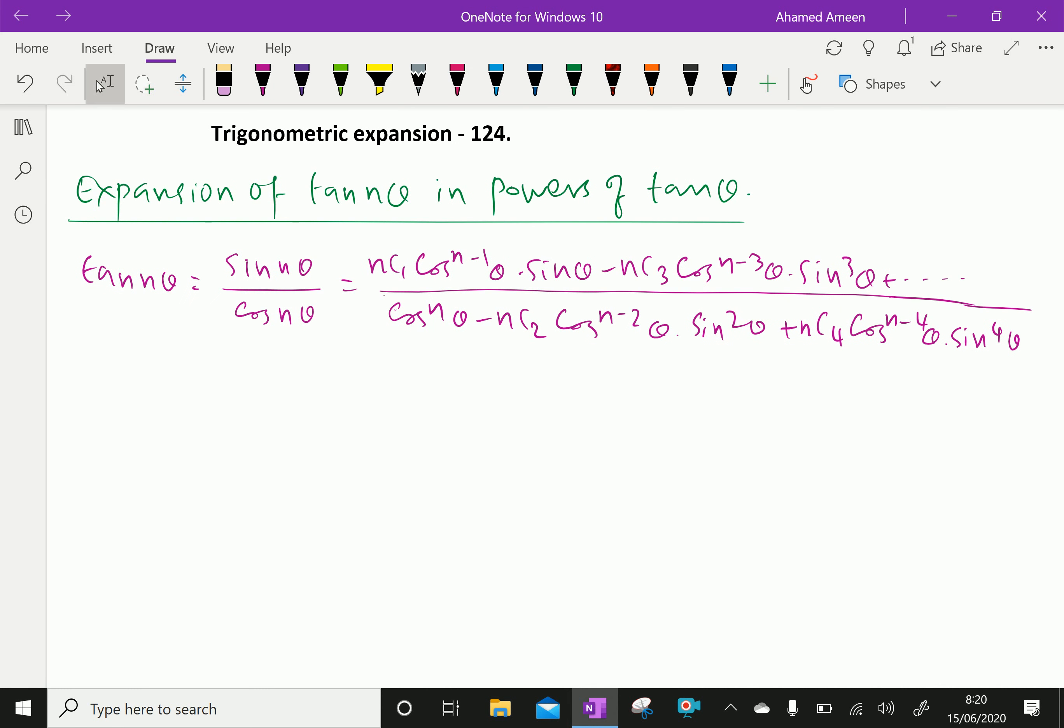By dividing numerator and denominator by cos power n theta for each term, we will get the result.